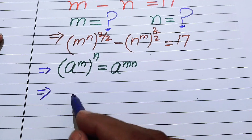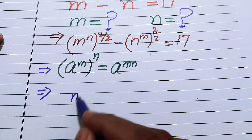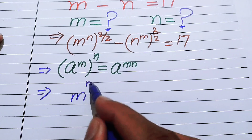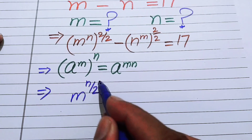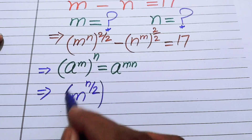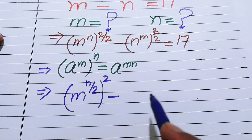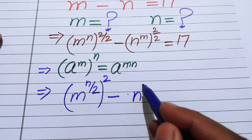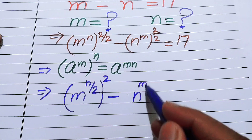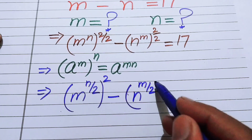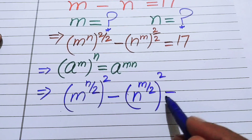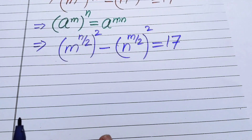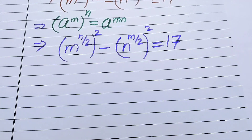According to this law, our equation becomes: m to the power of n over 2, whole squared — by multiplying 1 over 2 by n — minus n to the power of m over 2, whole squared — by multiplying 1 over 2 by m — equals 17.